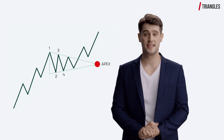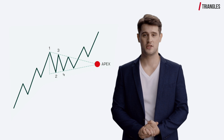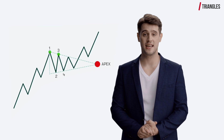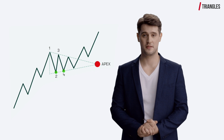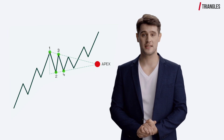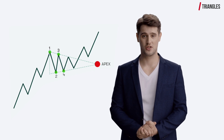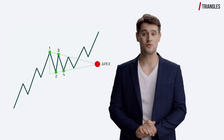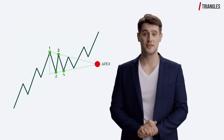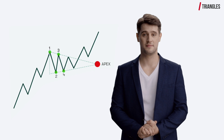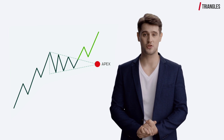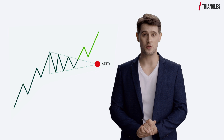In other words, the pattern consists of at least two lower highs and two higher lows. Notice how point three is lower than point one in the descending line, and point four is higher than point two in the ascending line. These points determine what kind of triangle the formation is. For example, if point three was on the same level as point one, a horizontal upper line would be drawn rather than a descending one, which would change the type of triangle. But one thing is always guaranteed — eventually the price breaks out of the triangle, and in most cases the prior trend resumes.